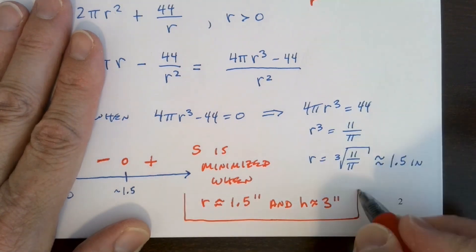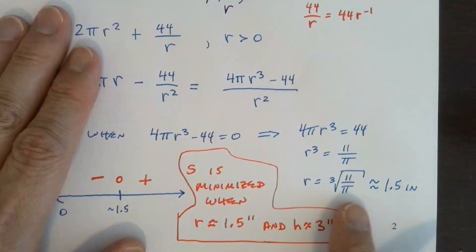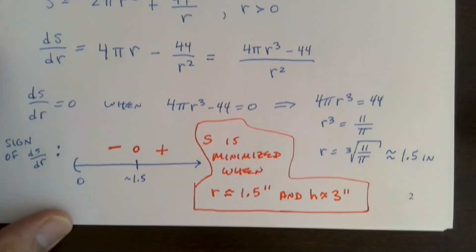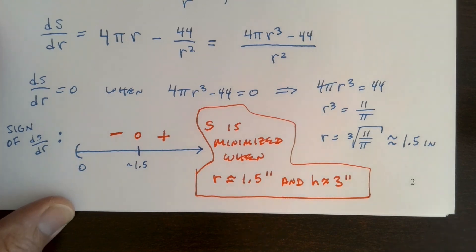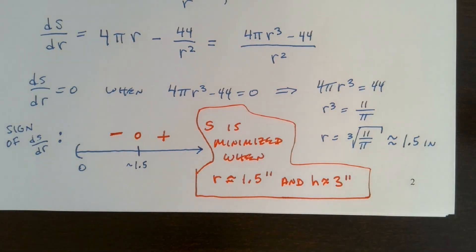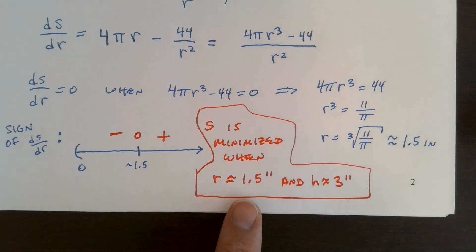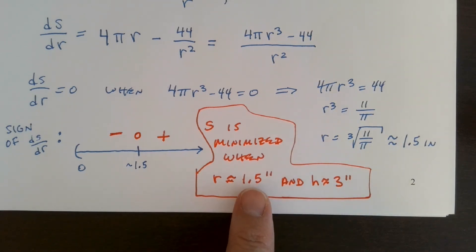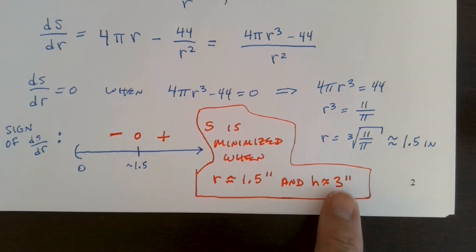The minimum surface area can be found by plugging r into the formula S(r) = 2πr² + 44/r, giving a result in square inches. Notice: the radius is 1.5 inches, so the diameter is 3 inches, and the height is also 3 inches. Looking at such a can from the side, you'd see a perfect square profile.